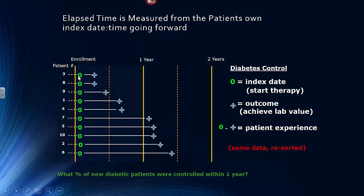In the previous example, we showed you that you could answer important, meaningful questions of how much time elapsed before patients were brought under control, using the cohort method. And if we define success as a positive result before a year, this method appropriately identified the 5 out of 10 people who actually were successes.